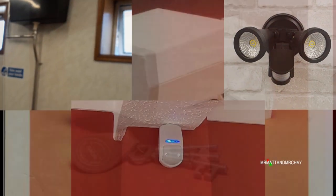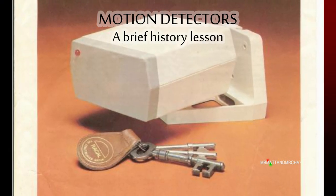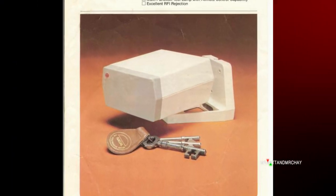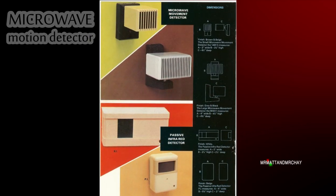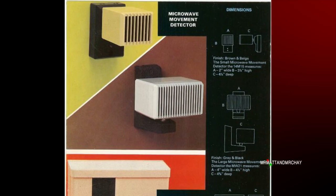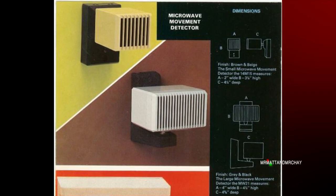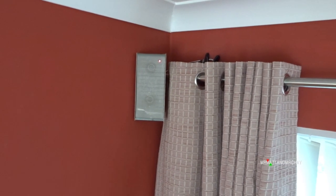The first type was from the late 1970s, the microwave motion detector. But the problem was the radio waves emitted penetrated thin walls, causing false alarms if it wasn't positioned and adjusted correctly.